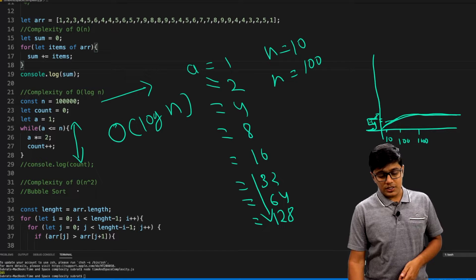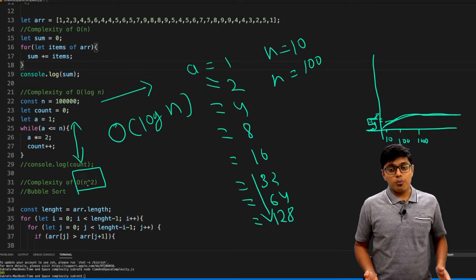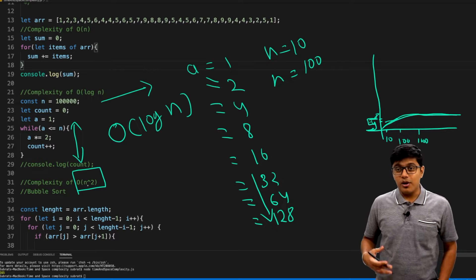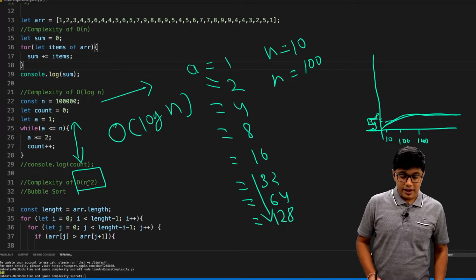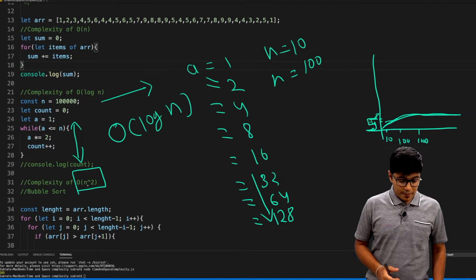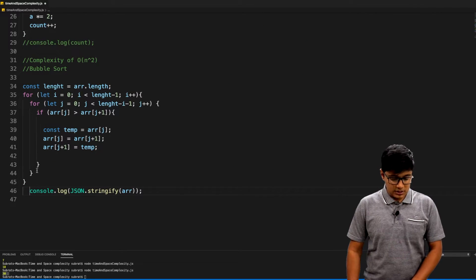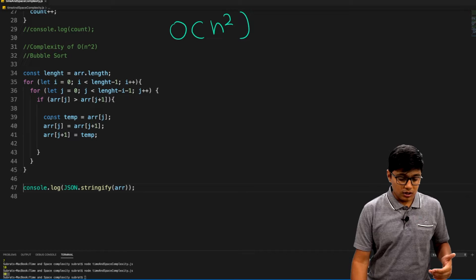Now we'll go to a time complexity of n square, which is popular. While programming, you will tend to do it in an n square operation. The example I've written here is bubble sort.